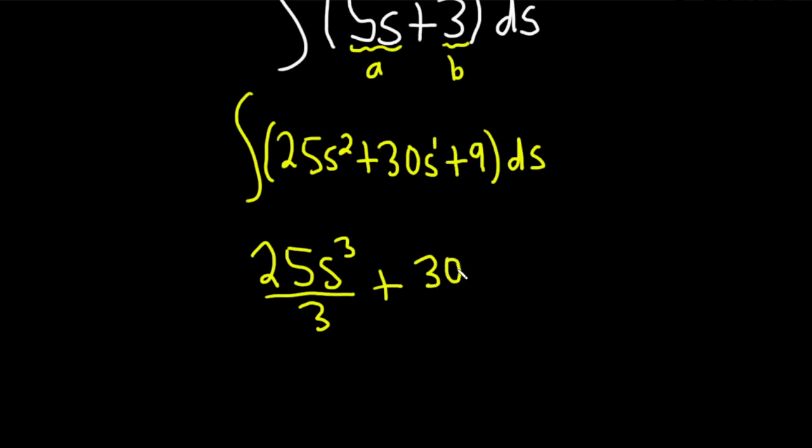There's a 1 here so you add 1 to the exponent so 2 and you divide by the result plus, and then whenever you have a constant you integrate that you're just going to get 9s plus our constant of integration capital C.